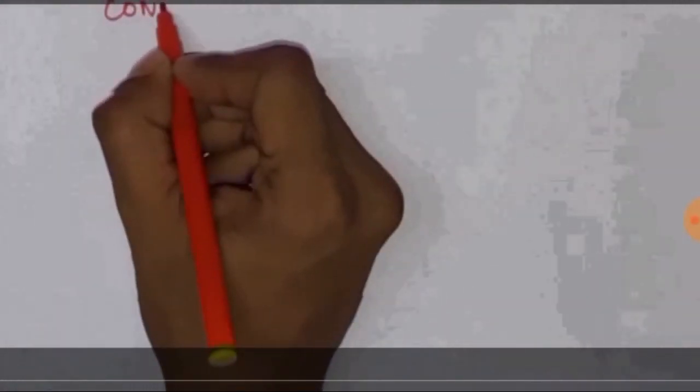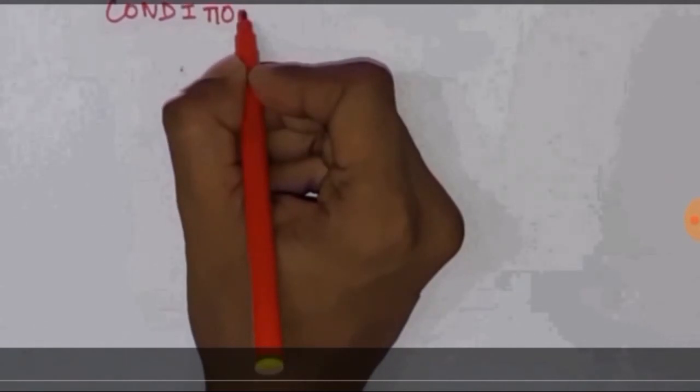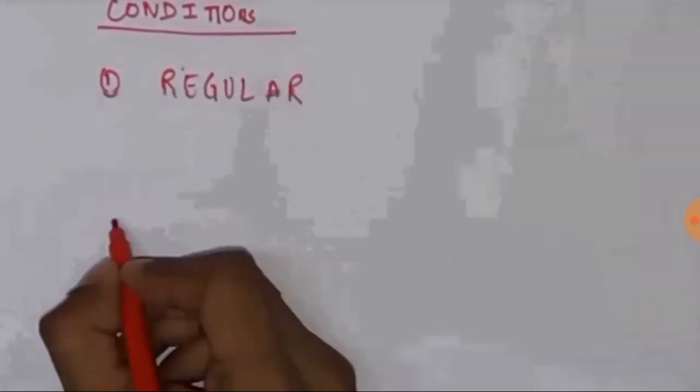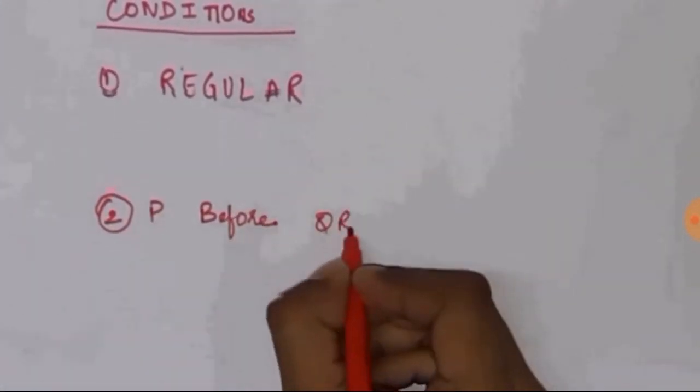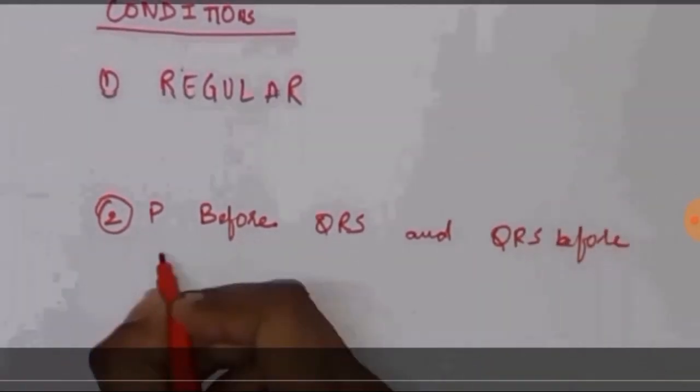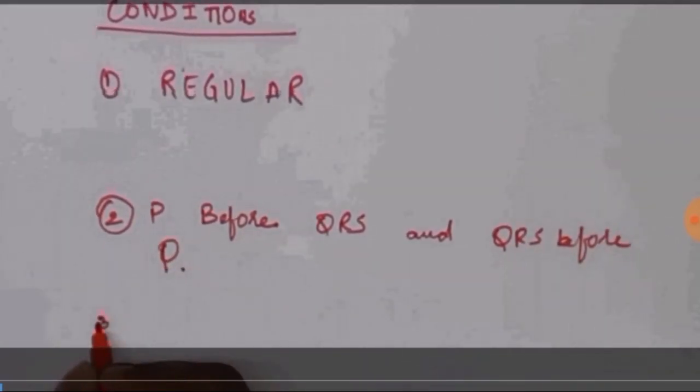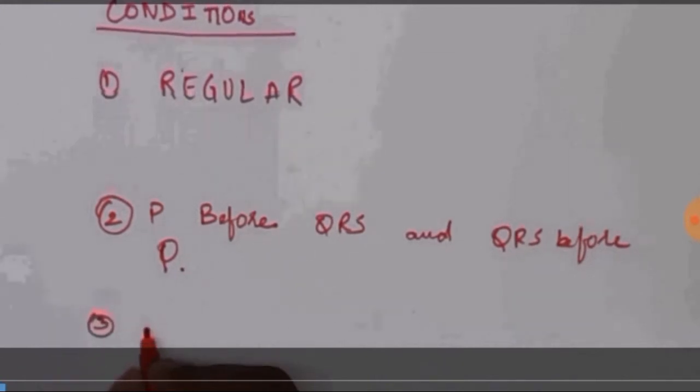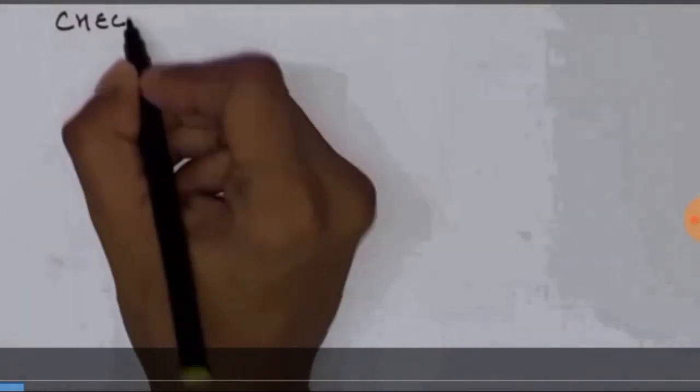There are certain conditions that is to be fulfilled in order to determine the rhythm of the heart in an electrocardiogram. These are the conditions which must be fulfilled if we are to determine the rhythm. Let us look at those. The first is the regularity. Second, the P before QRS and QRS before T. I will explain this later what does this mean. And third, is the P wave should be normal.